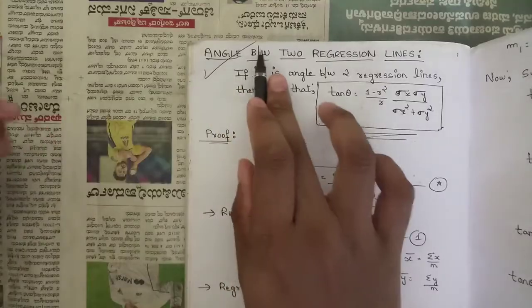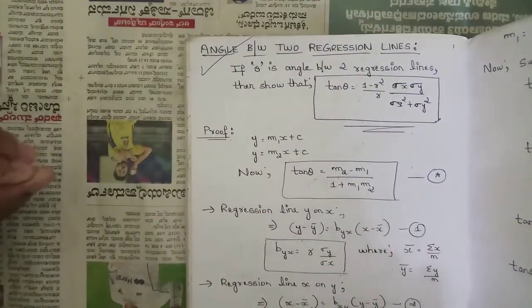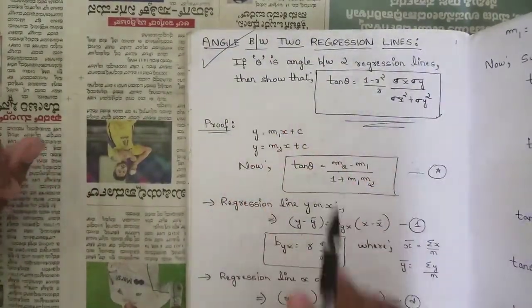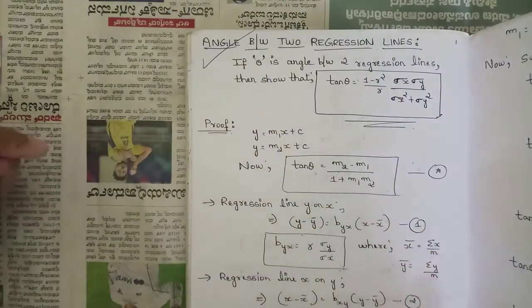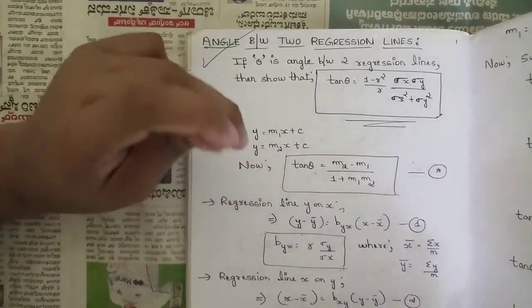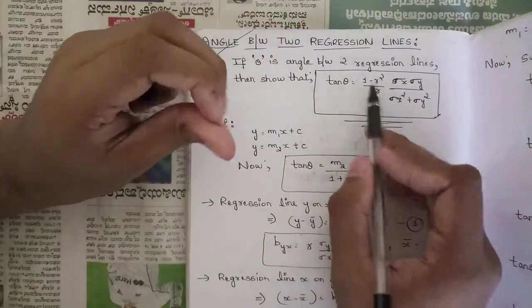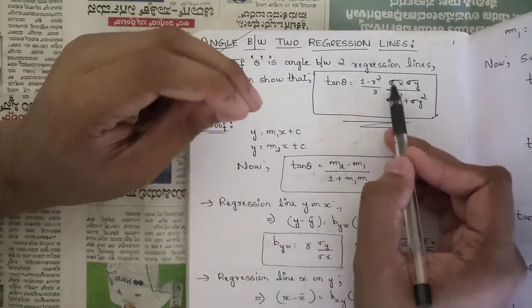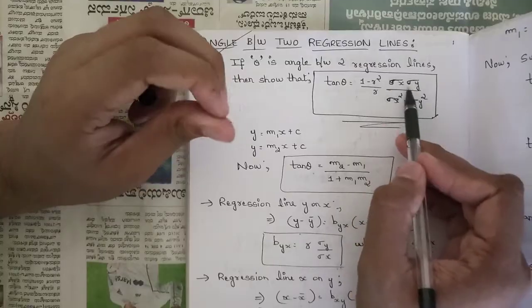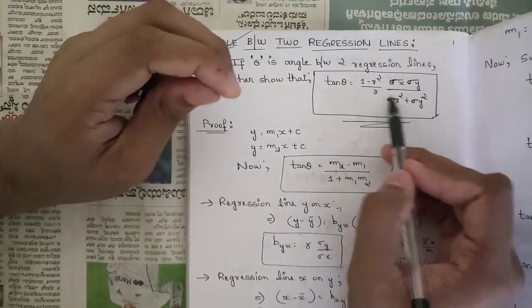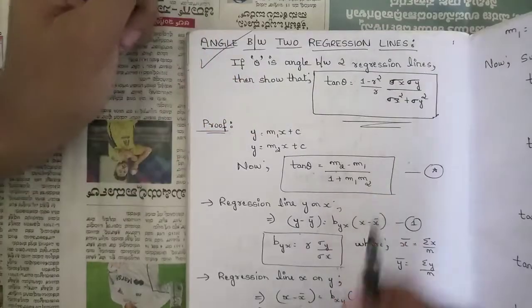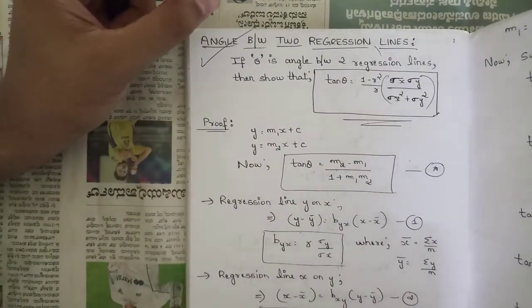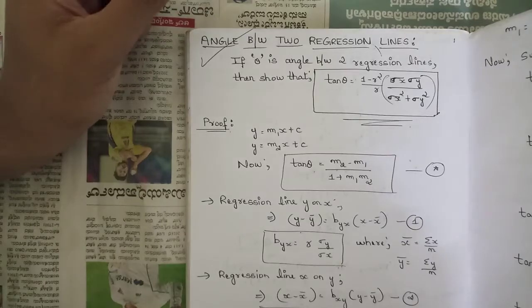In this last session we are going to cover the one last topic related to regression — that is, finding the angle between two regression lines. For that we have a direct formula: if theta is the angle between two regression lines, then tan θ = (1 - r²) / r · (σx · σy) / (σx² + σy²).